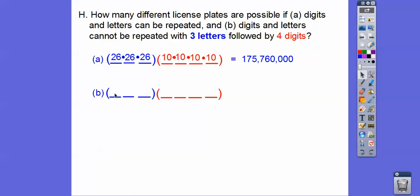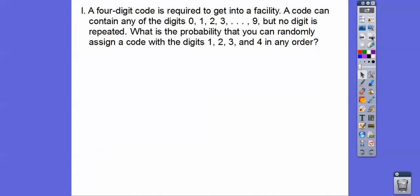Okay, now this one, it can't be repeated, so this is going to be 26 times 25 times 24. This one's going to be 10 times 9 times 8 times 7 because it cannot be repeated, so once you used it up, it's gone, all right? And that mess comes out to 78,624,000, okay? So you just got to watch the wording.